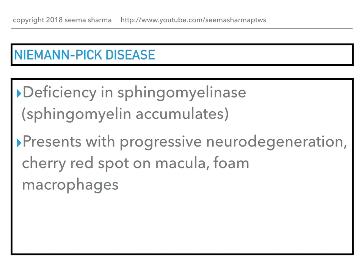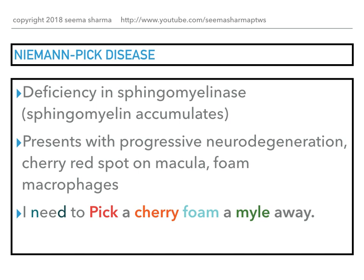My way of remembering this is: 'I need to pick a cherry from a mile away.' The N and D from 'need' help me remember neurodegeneration. 'Pick' is from the name Niemann-Pick. 'Cherry' is for the cherry red spot on the macula. 'Foam' is if you mispronounce 'from.' And 'amyle' is for the accumulated substrate, which is sphingomyelin.